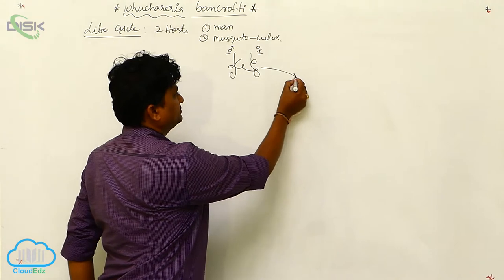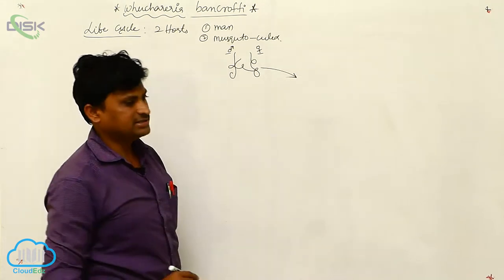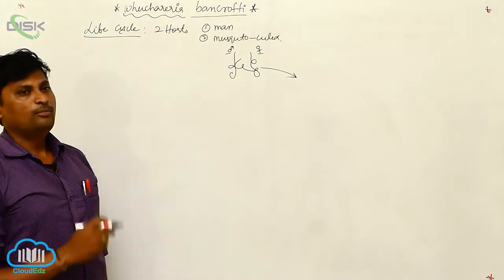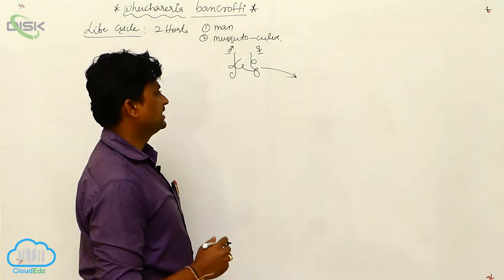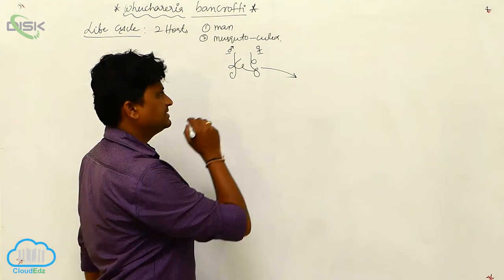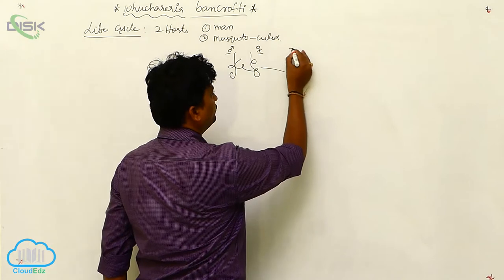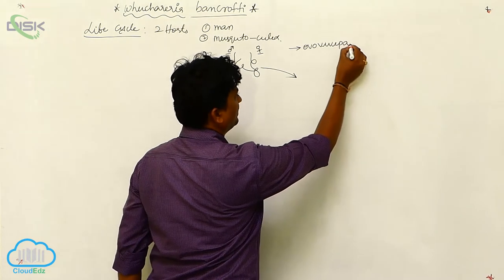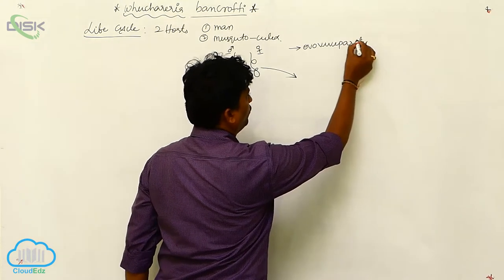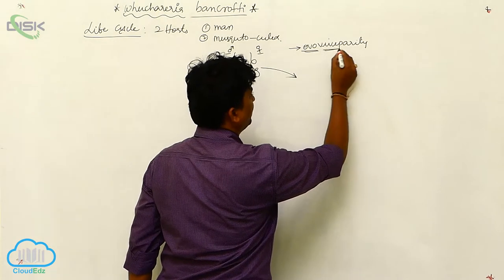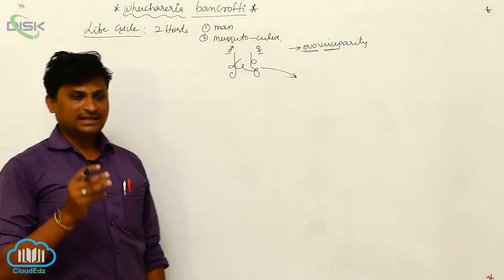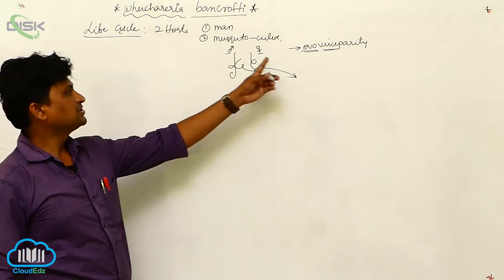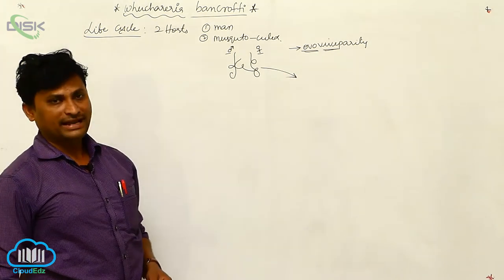After copulation, a special type of sheathed microfilaria larvae are released. Here we must discuss ovoviviparity — OV parity is very important. 'Oo' means eggs, 'vivi' means laying of young ones. Both together means laying of eggs consisting of young ones. That is why this specialized character is called ovoviviparity.